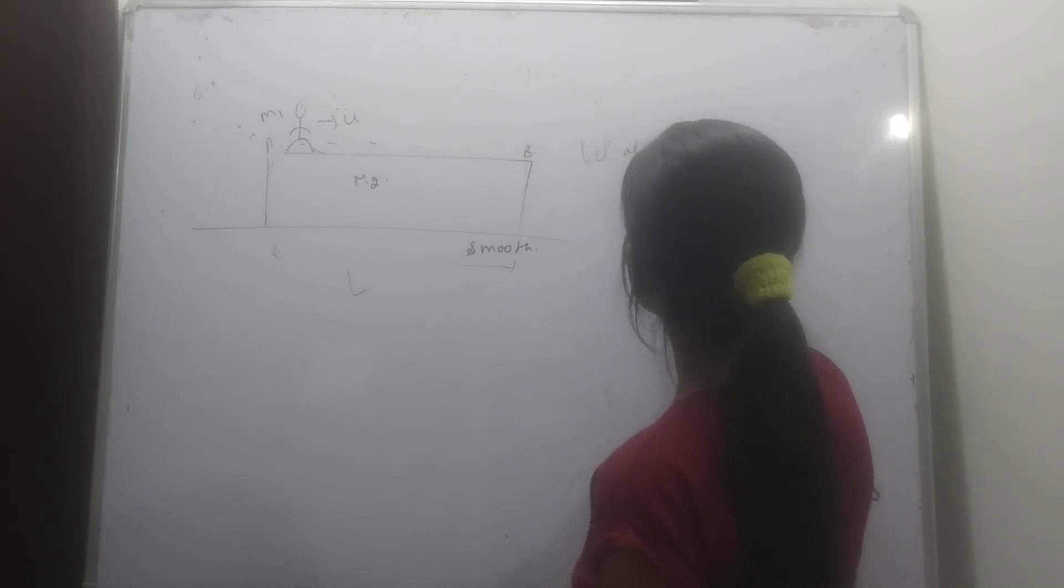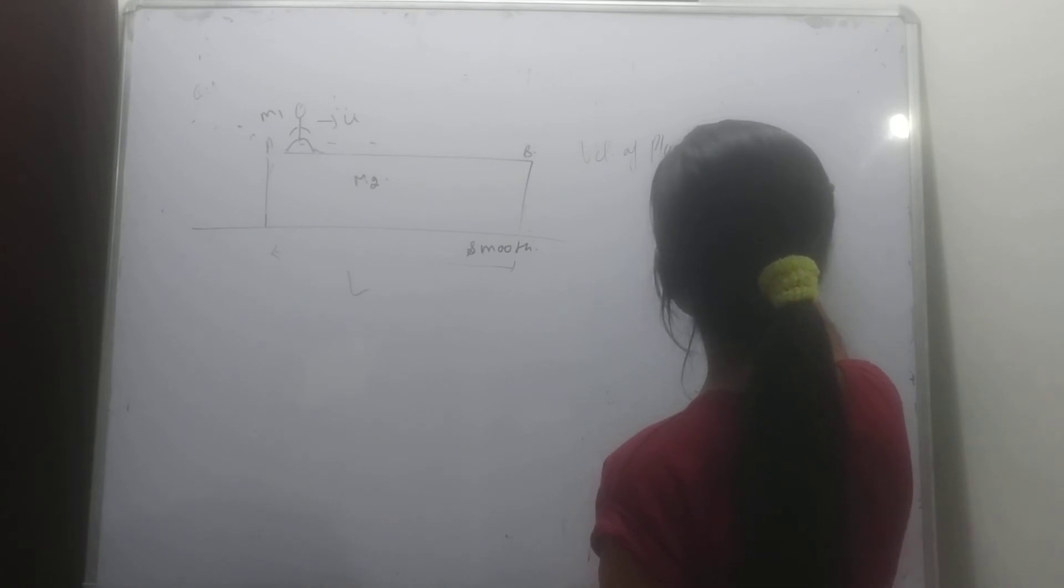The velocity of plank is M1 times U divided by M1 plus M2, in the left direction.